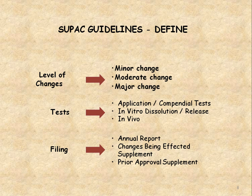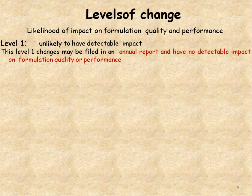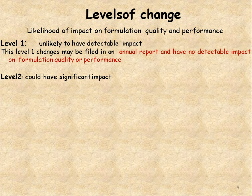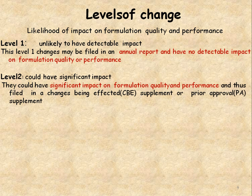If this change is reported in the Annual Report, then into the supplement, and third is the Prior Approval Supplement — meaning in the previously approved application or supplement you have to mention this change. Level one change is unlikely to have a detectable impact, may be filed in an Annual Report, and has no detectable impact on formulation quality or performance. Level two change has a significant impact on formulation quality and performance and is thus filed in a Changes Being Effected supplement or Prior Approval Supplement.